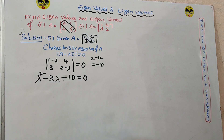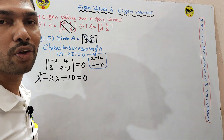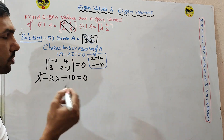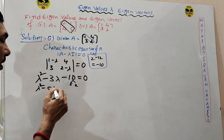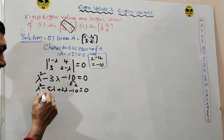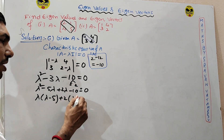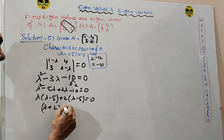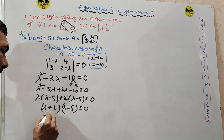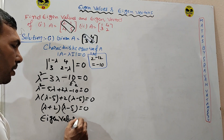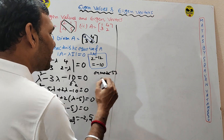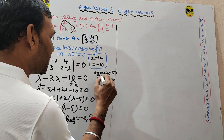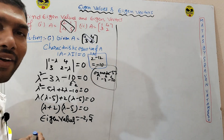We find the lambda values. Using the calculator (mode 5, 3), enter coefficients A=1, B=−3, C=−10 and get eigenvalues directly: lambda values are minus 2 and 5.